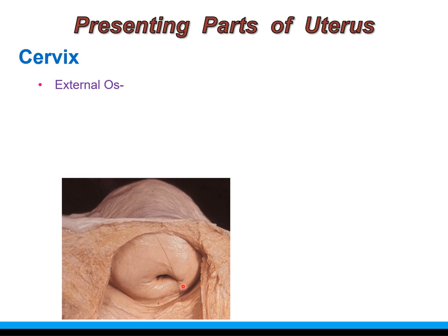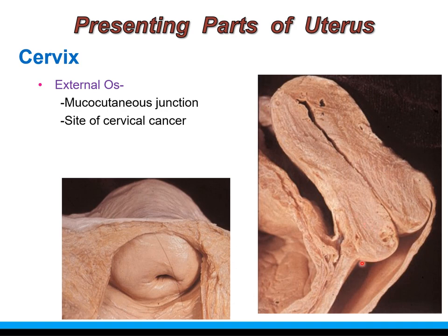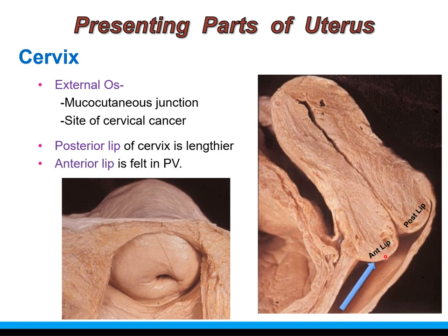The intravaginal portion of the cervix is seen through the vaginal canal. At the external os, the mucosal lining shows an abrupt change from simple columnar epithelium to stratified squamous epithelium — a mucocutaneous junction that is a frequent site of cervical cancer, acting as a transitional zone. In sagittal section, the intravaginal portion of the cervix shows two lips: anterior and posterior. The posterior lip is longer because the posterior wall of the vagina attaches to the cervix at a higher level. However, it is the anterior lip that is felt during per-vaginal examination.